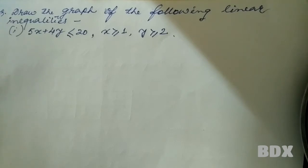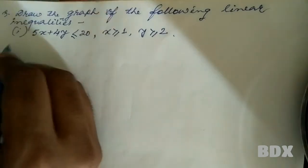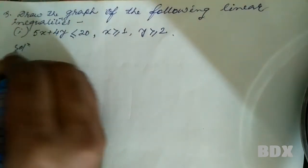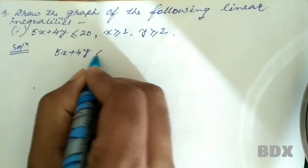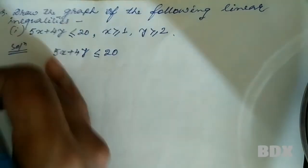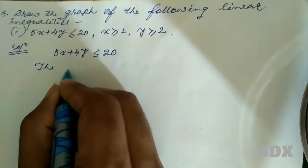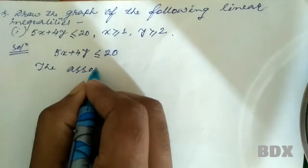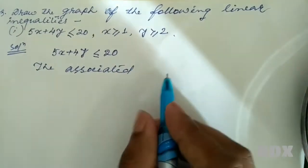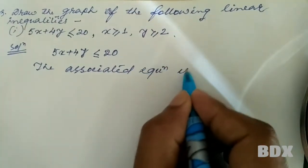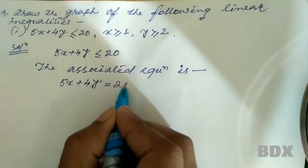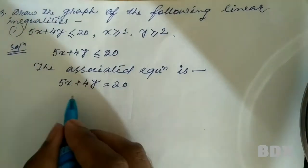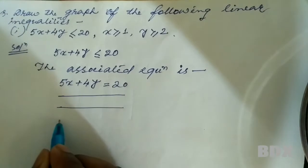The three inequalities are: 5x plus 4y less than or equal to 20, x greater than or equal to 1, and y greater than or equal to 2. Let's solve. For 5x plus 4y less than or equal to 20, the associated equation is 5x plus 4y equal to 20. Let's find two solutions of this equation.